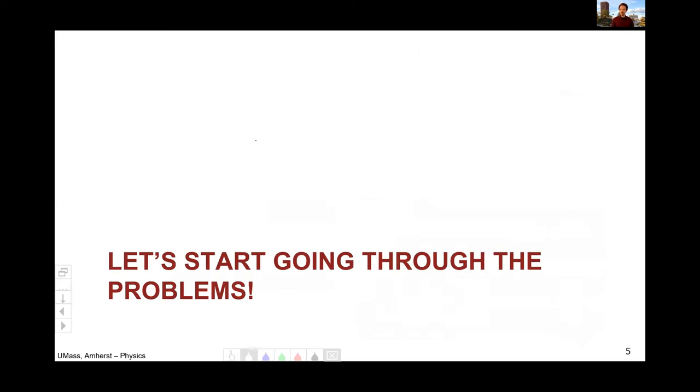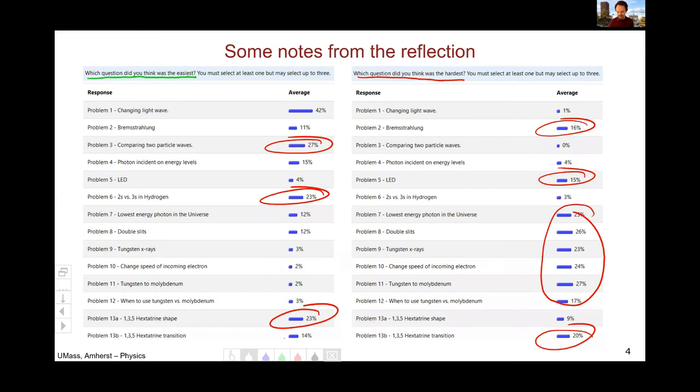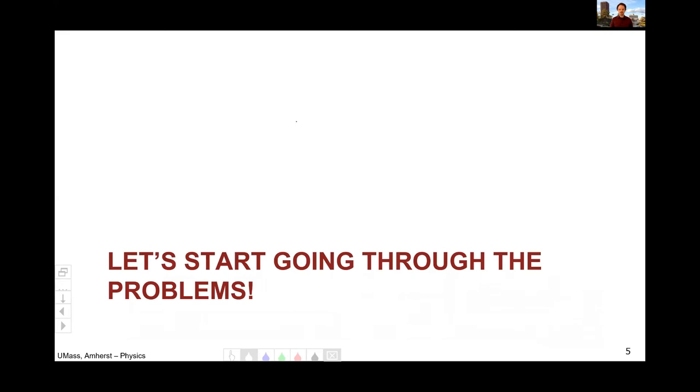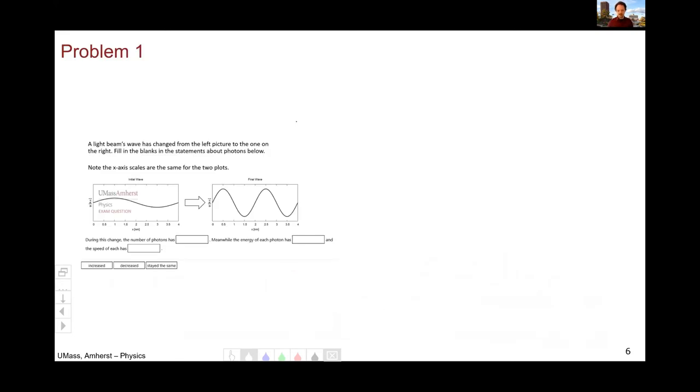So now let's start going through the exam. We're going to begin with problem one, which was by far voted the easiest problem by the most people. And here is the problem where the photon goes from the wave on the left to the wave on the right. We can see that the amplitude of the wave has increased, which means that the number of photons has increased. Similarly, we can see that the wavelength has shrunk. And so since the wavelength has shrunk by P equals H over lambda and E equals PC, if the wavelength goes down, the momentum goes up. If the momentum goes up, the energy goes up. And so the energy of each photon has increased.